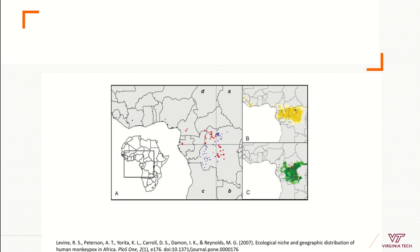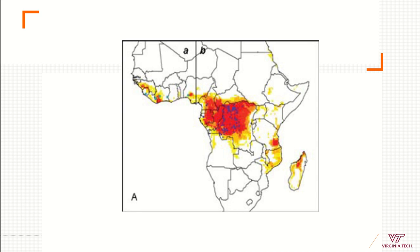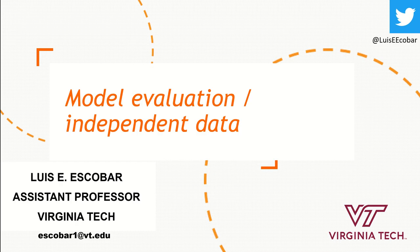This is an example modeling the geographic distribution of monkeypox in Africa. They were also splitting cases to identify how models predicted independent data — for example calibrating the model first with the red points and checking if it correctly predicted the blue points, then calibrating with the blue points and checking if it predicted the red points better than random. Once you are comfortable that the model is doing a good job, you can use the whole data set to build your final model. That is a summary of model evaluation using independent data. Thank you.